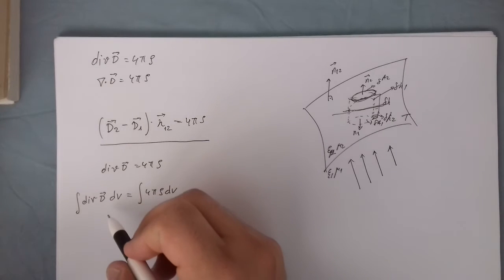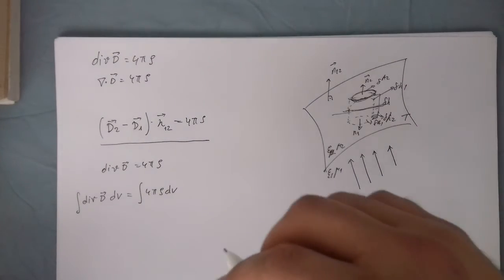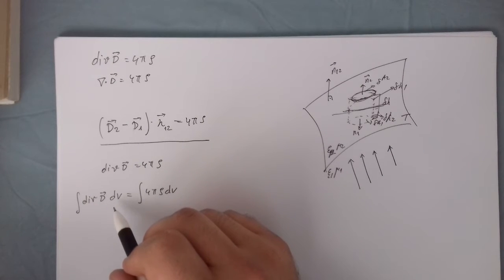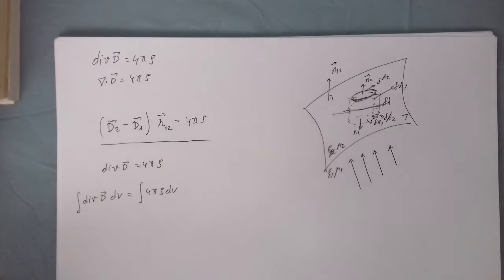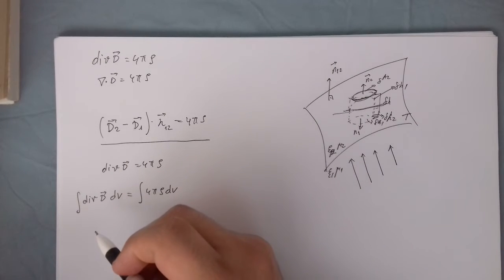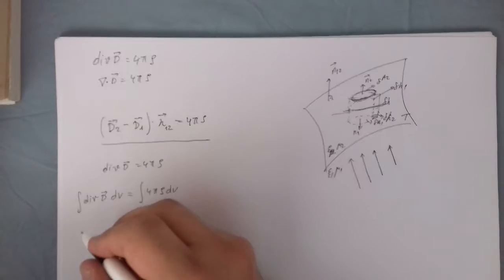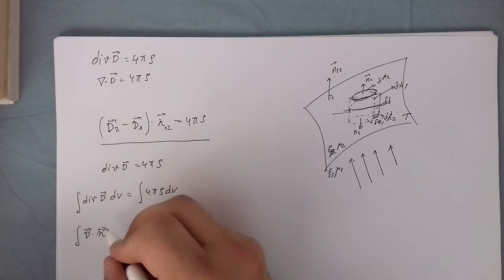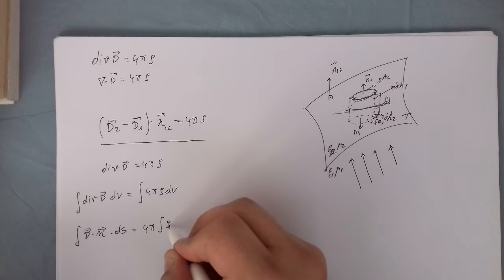Now I'm going to use one of the other theorems — I believe it's Gauss's theorem — converting the volume integral to a surface integral. So the integral of D vector dotted with N dS equals 4 pi times the integral of rho dV.